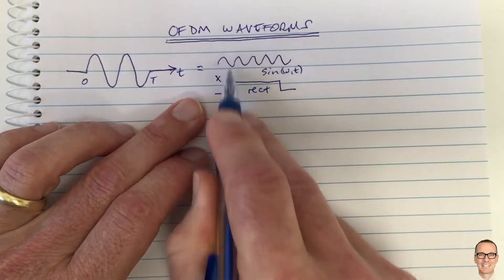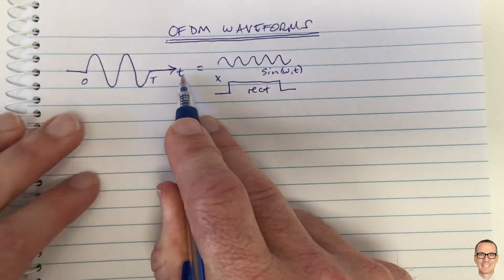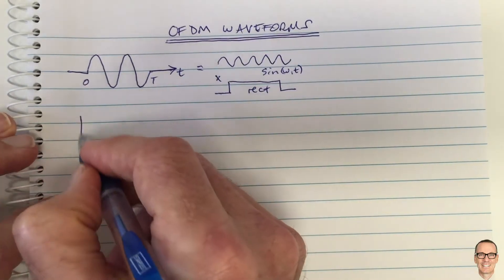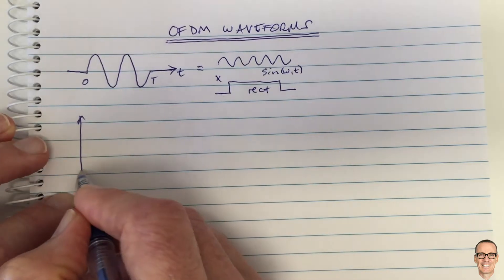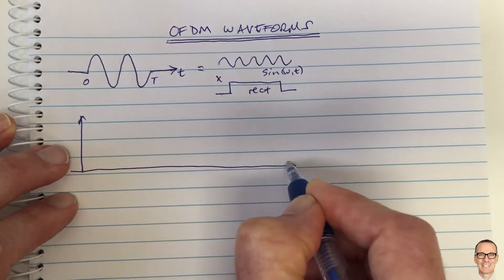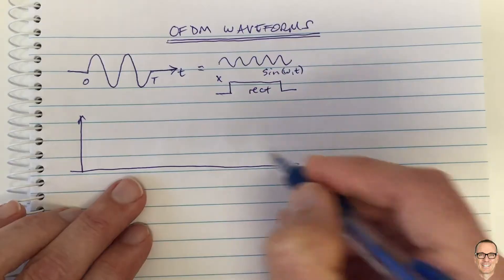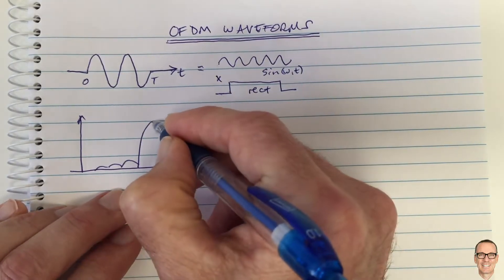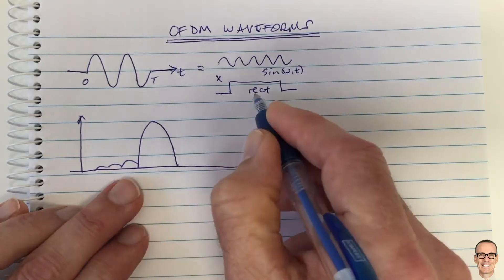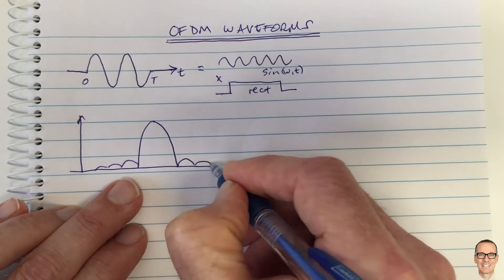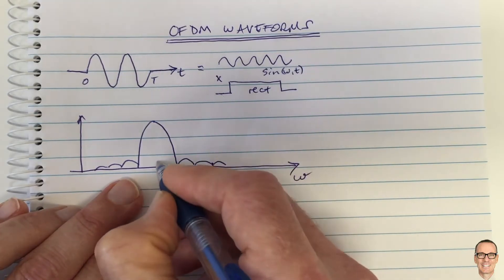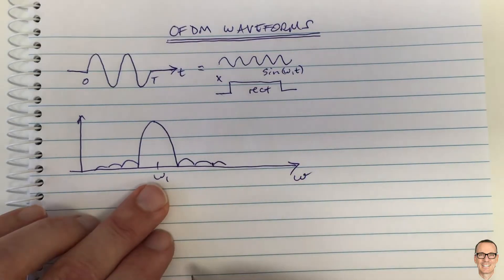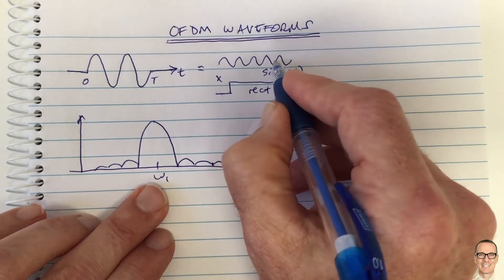And as we know multiplication in the time domain is equivalent to convolution in the frequency domain and so from a frequency domain perspective this signal occupies frequencies that are like this. It's a rect function, it's the Fourier transform of the rect which is a sync function located at the carrier frequency of the sine wave of the carrier.